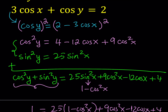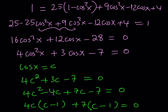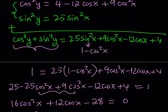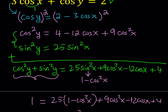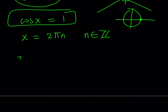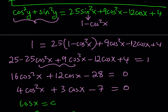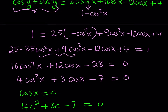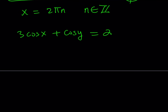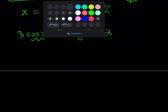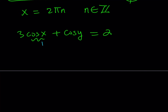Since cosine x equals 1, the second equation 3 cosine x plus cosine y equals 2 gives us 3 times 1 plus cosine y equals 2, and solving for cosine y we get cosine y equals negative 1.